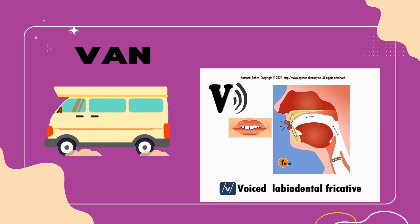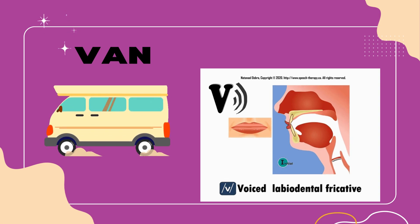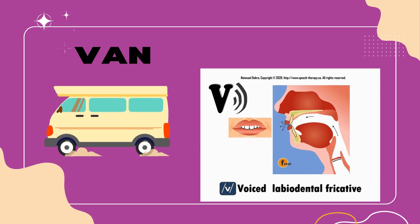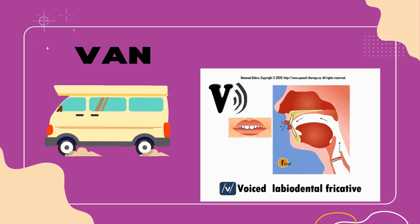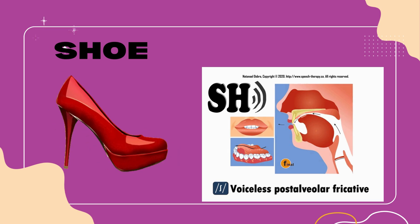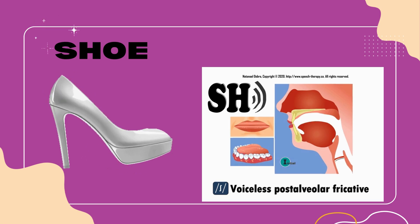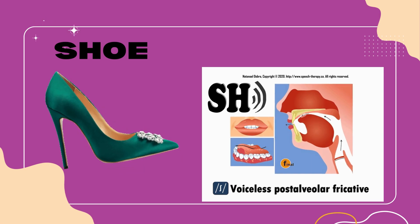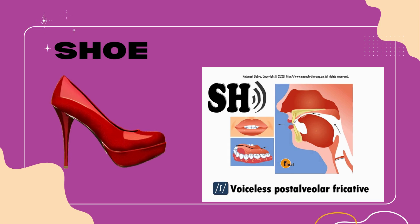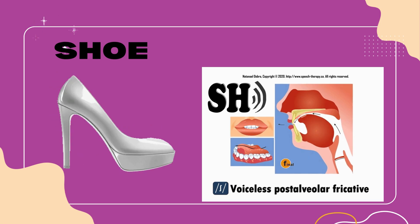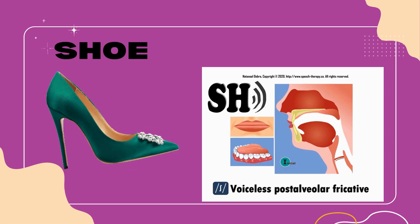Van features the letter V, representing the voiced labiodental fricative sound V. As we say van, we gently bring the bottom lip close to the upper teeth, allowing the airflow to create a buzzing sound similar to F but voiced. Lastly, shoe starts with the letter combination SH, representing the voiceless post-alveolar fricative sound SH. When pronouncing shoe, the airflow is directed over the back of the tongue and out between the tongue and the roof of the mouth, creating a characteristic SH sound.